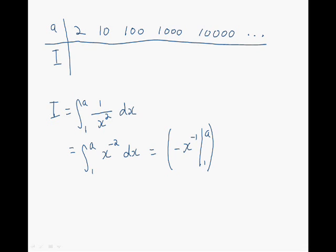And if we replace this into our antiderivative, we get minus a to the power of minus 1, minus 1 to the power of minus 1. And if we simplify this a bit, we get minus 1 over a plus 1. So this is the value of i.